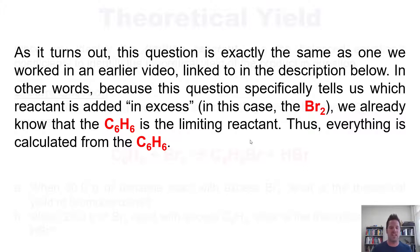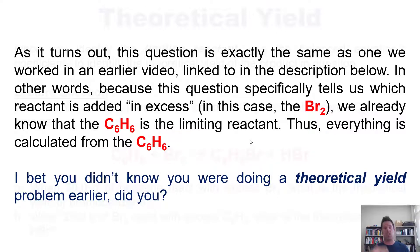Thus, everything is calculated from C6H6. Again, we already did this problem earlier, but you probably didn't know at the time that you were doing a theoretical yield problem, did you? But you totally were. The process that we went through for this question earlier was a theoretical yield. When we obtained the amount or number of moles and grams of bromobenzene we would obtain, that was the theoretical yield of bromobenzene. Isn't that fun?